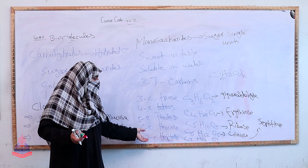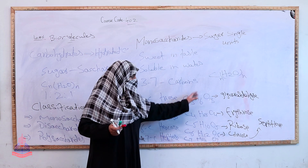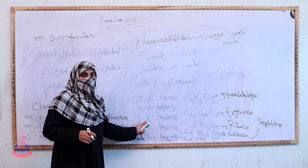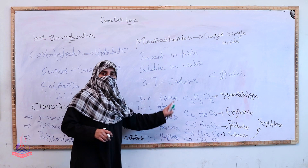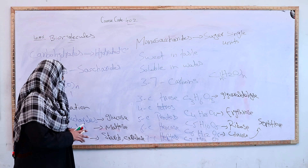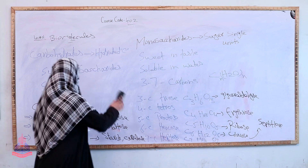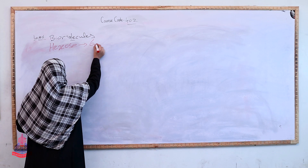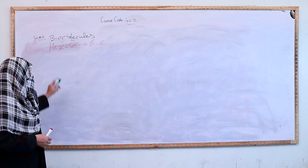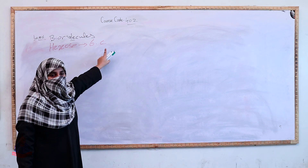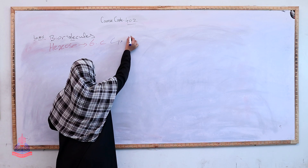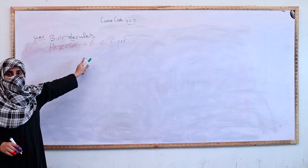Our main focus among monosaccharides will be on hexose. Hexose is a six-carbon compound. Common examples of hexose are glucose and fructose, as well as galactose, mannose, and xylose — all six-carbon compounds. But our main focus will be on glucose and fructose. First, we will discuss glucose.